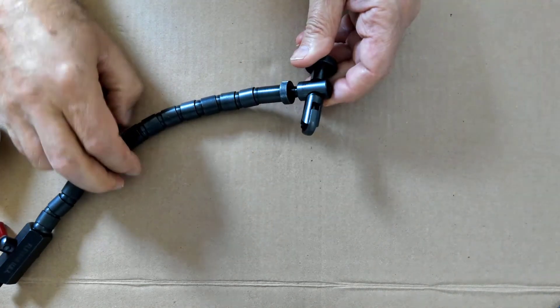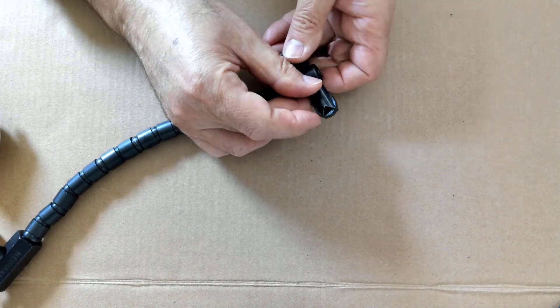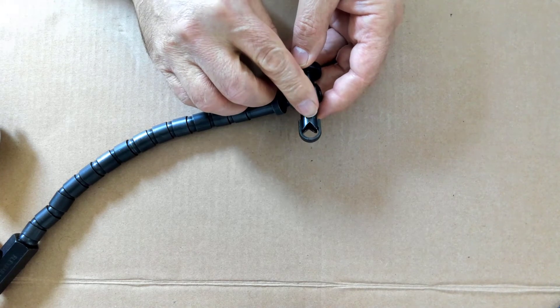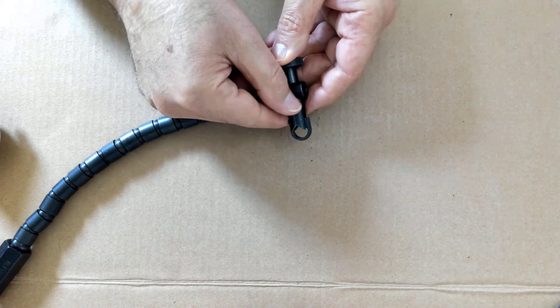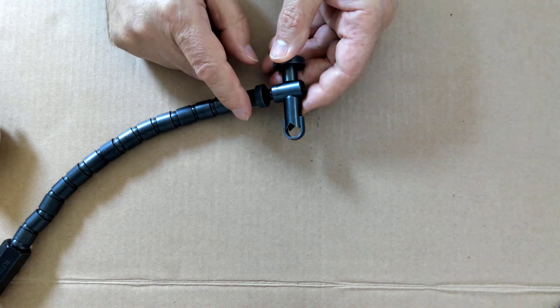On the end of the snake, where the dial indicator fits, this is a V-clamp with a circular end to it. This is designed for clamping onto round objects.